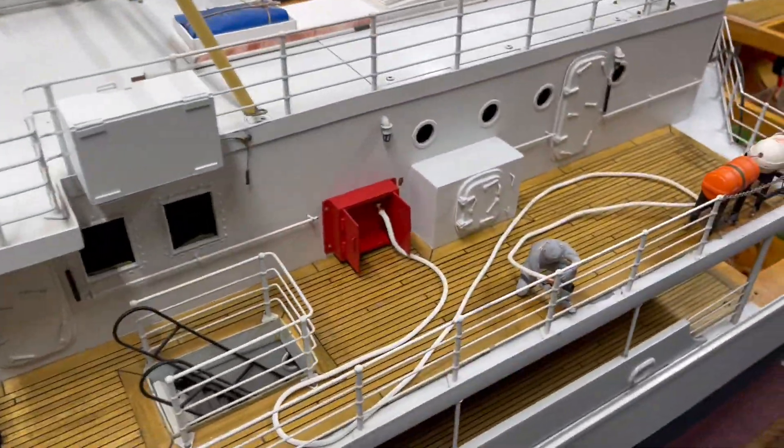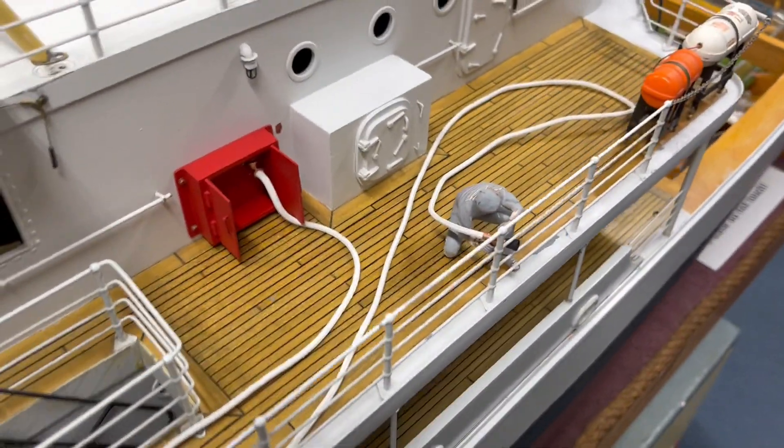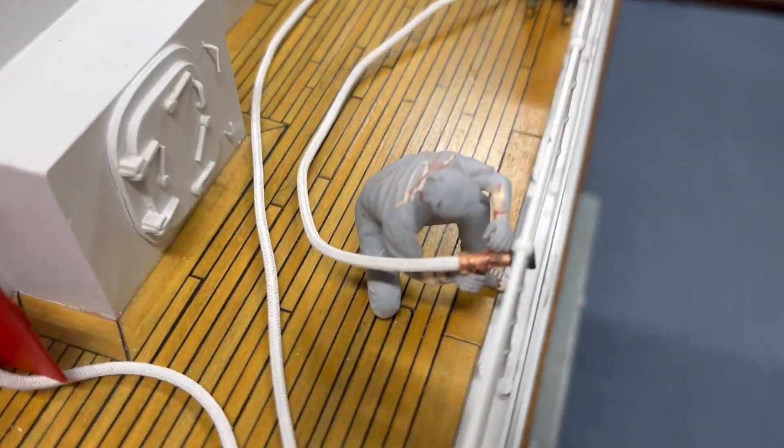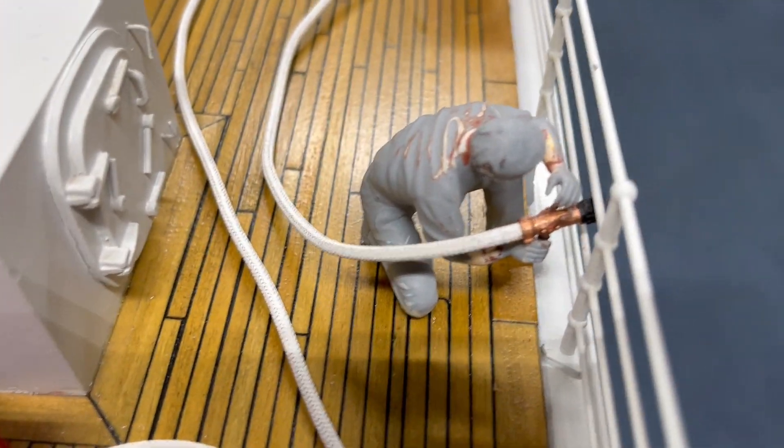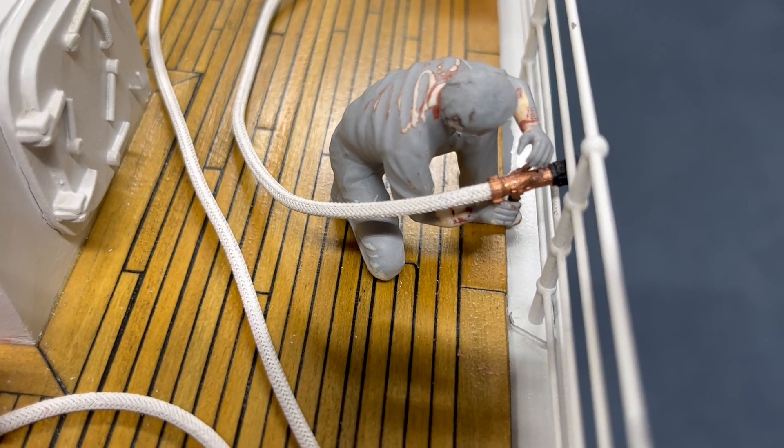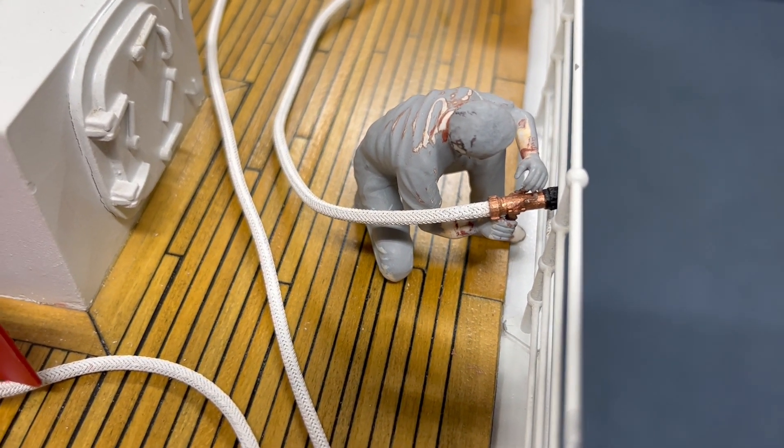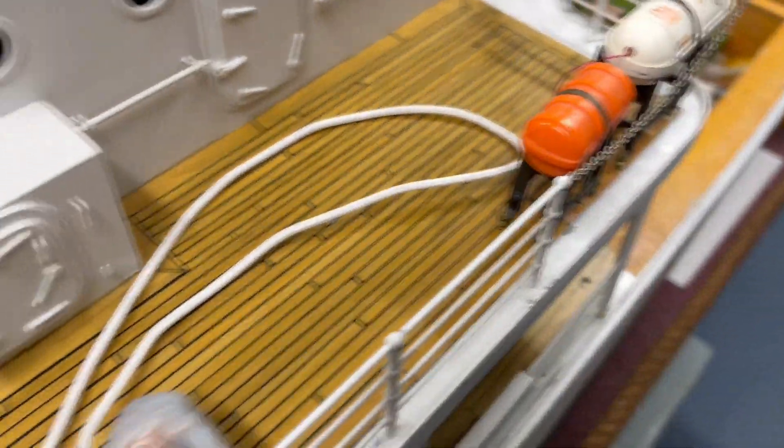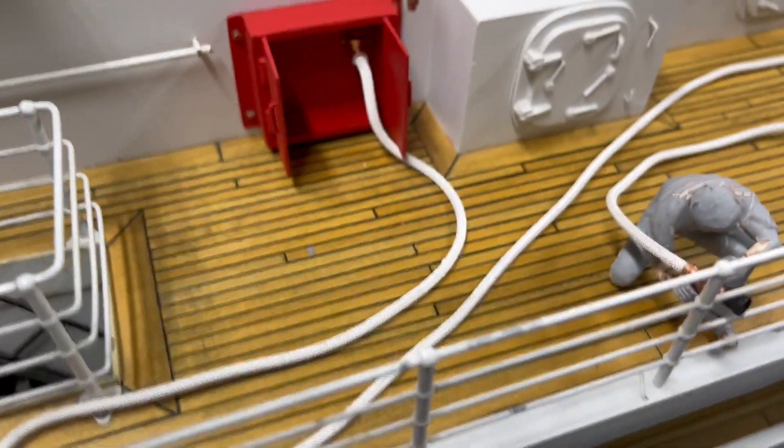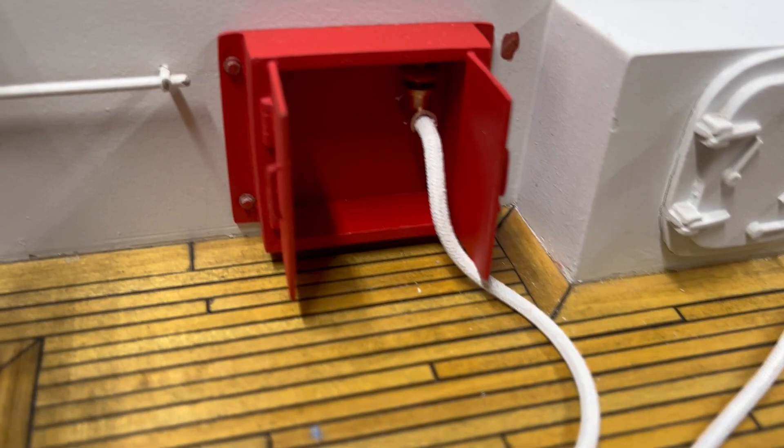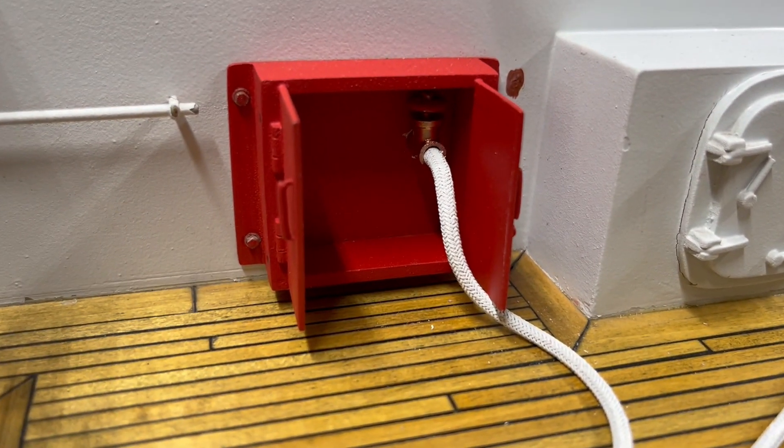And then over here is the crew member that still needs to be painted, with the fire hose. You can see here I have a 1:25 scale fire nozzle handheld. I've got the fire hose and it runs up to the fire station there. The doors are open and there's the valve inside.